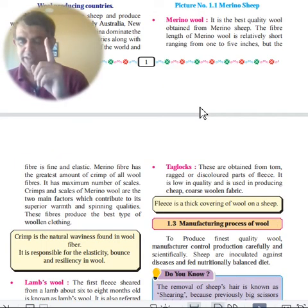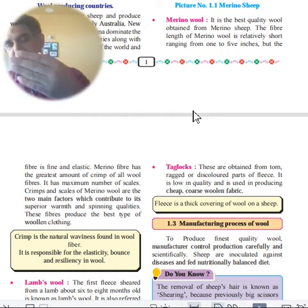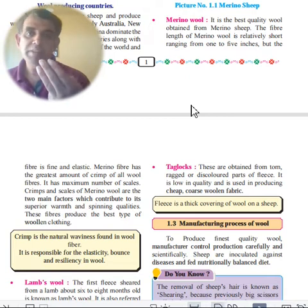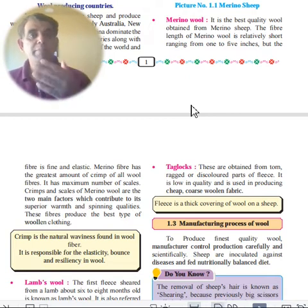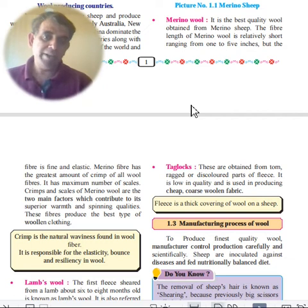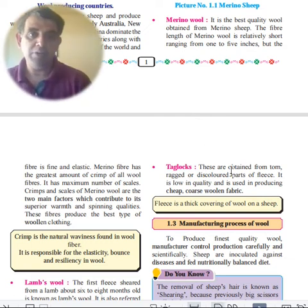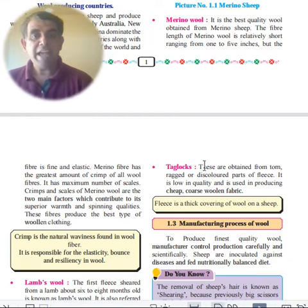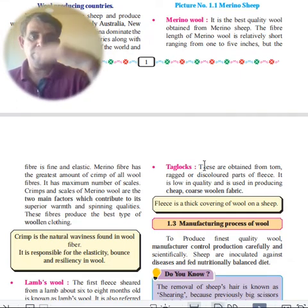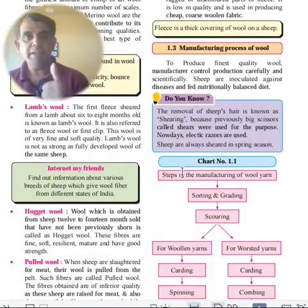So the main types are: Merino (best quality); then age-based — Lamb (6–8 months), Hogget (12–14 months), Wether (14 months+); Pulled wool (from slaughtered sheep); and Tag locks (ragged/discolored fleece, lowest quality).